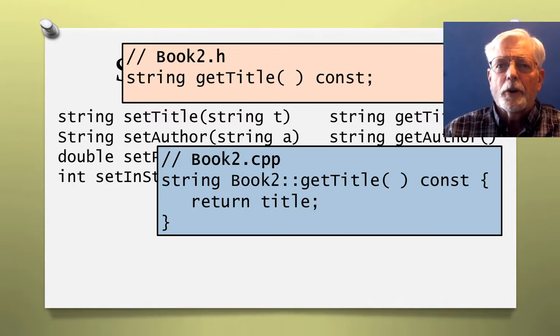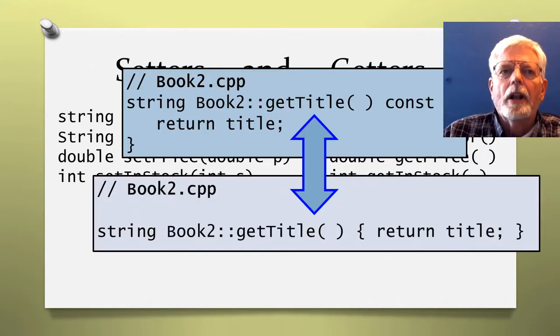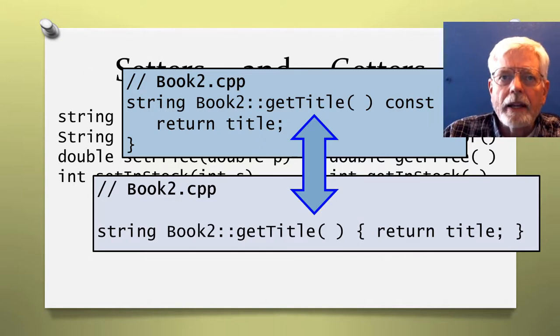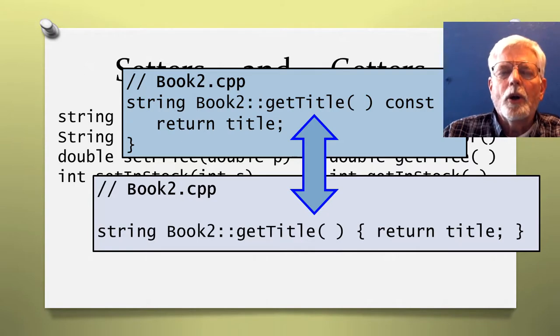Some companies may want you to code this function method on multiple lines instead of one line. If you decide to code the function method using only one line, pay close attention to the placement of the curly braces and especially the semicolon.